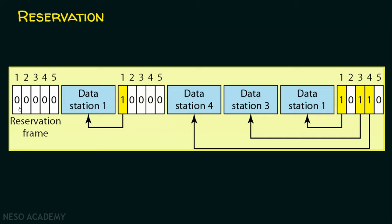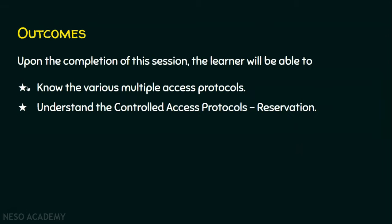From this it is clear that there is a reservation frame, each station makes a reservation in its own mini slot, and the reservation frame is sent before the data. This is how the shared medium is accessed by more than one station without collision. I hope you now know the various multiple access protocols and understand the controlled access protocol — the reservation method. Thank you for watching.